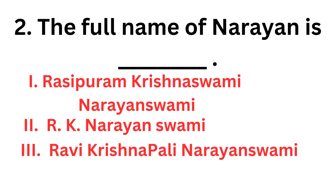Next question: what was the full name of R.K. Narayan? The options are: Rasipuram Krishnaswami Narayan Swami, R.K. Narayan Swami, or Ravi Krishna Pali Narayan Swami. The correct answer is Rasipuram Krishnaswami Narayan Swami.